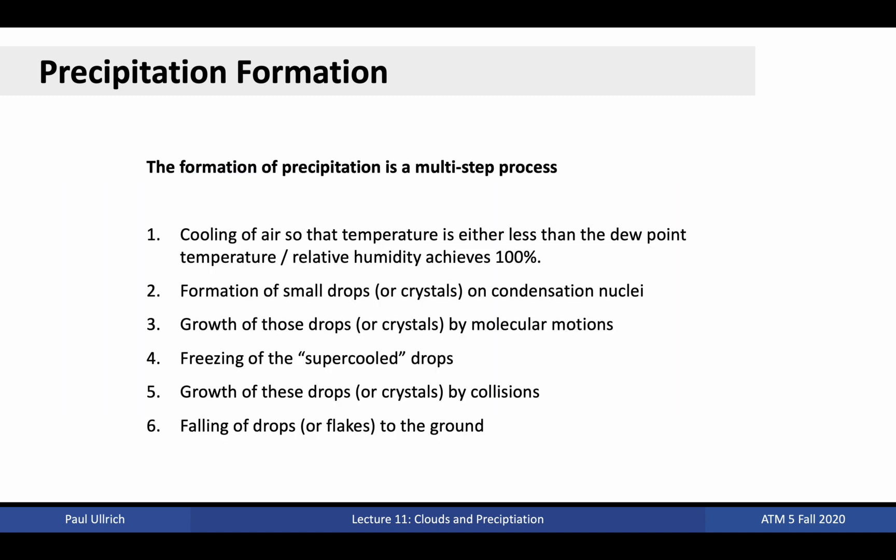Precipitation forms through a multi-step process. First, we need a cloud to be present, since those cloud droplets are the precursors to precipitation droplets. For a cloud to be present, we must have air that has reached saturation through lifting. Once this occurs, condensation will drive the formation of small drops or crystals on condensation nuclei. These drops and crystals then grow by molecular motions, pulling in moisture from the surrounding environment. Under certain conditions, such as with altocumulus clouds, pure liquid cloud droplets may be present at temperatures well below freezing, and under certain circumstances these cloud drops will rapidly freeze. Once droplets or crystals have formed throughout the cloud, they can then grow through mergers or collisions with other droplets or crystals. Then, once they become large enough, they can no longer be kept aloft by the turbulent motions inside the cloud, and will precipitate out to the ground.